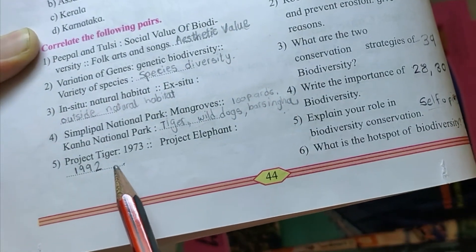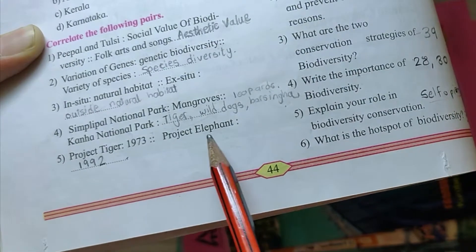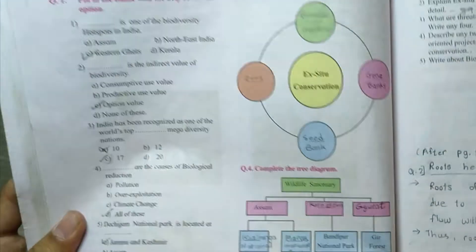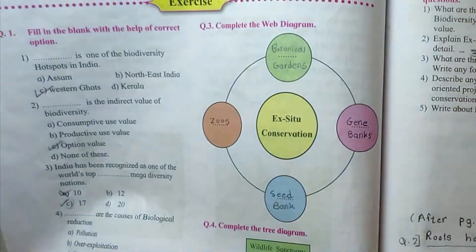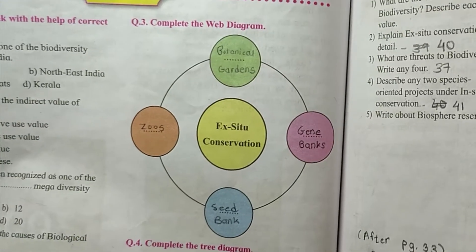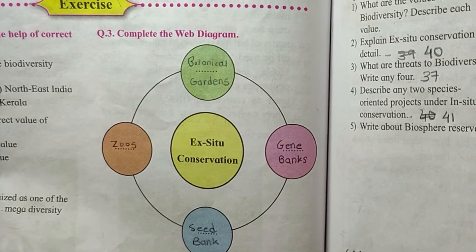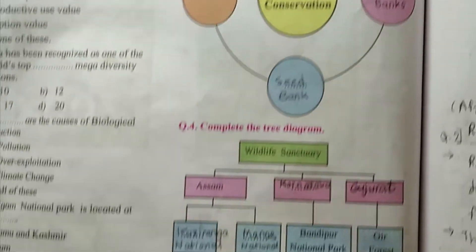Fifth, Project Tiger 1973, Project Elephant 1992. Question three, complete the web diagram, the answers are Botanical Gardens, Zoos, Gene Banks, Seed Banks.